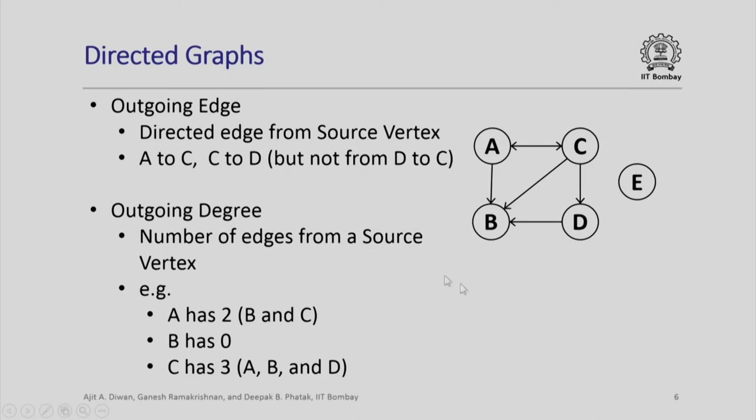So, a simple concept: outgoing edge is a directed edge from a source vertex and outgoing degree is the number of edges going out from a source vertex.